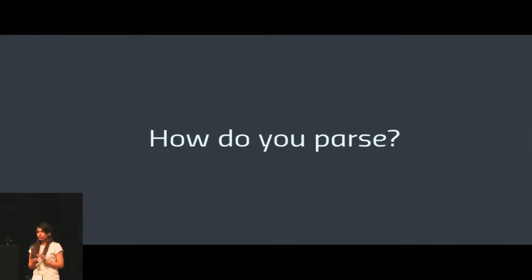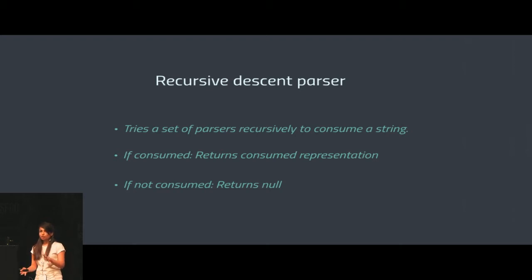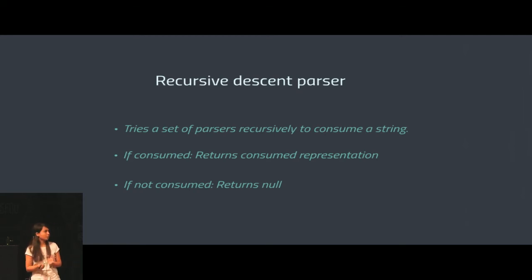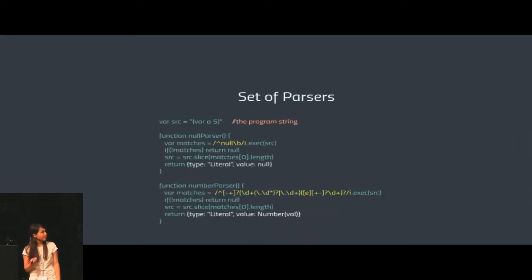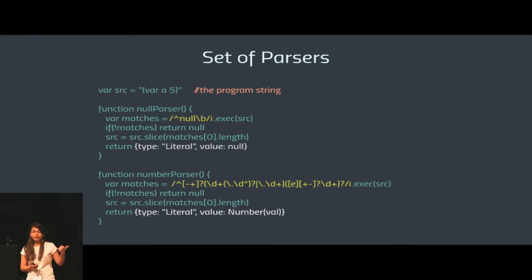Let's go into the inner workings of the parser and generator. We use a recursive descent parser, which is a top-down approach where a set of parsers are tried recursively to consume the program string. If a part is consumed, the parser returns the consumed representation and the rest of the string. If not, it returns null and tries other parsers. We have elementary parsers like null parser, boolean parser, number parser, and these build up to more complex parsers like function parser and variable declaration parser.